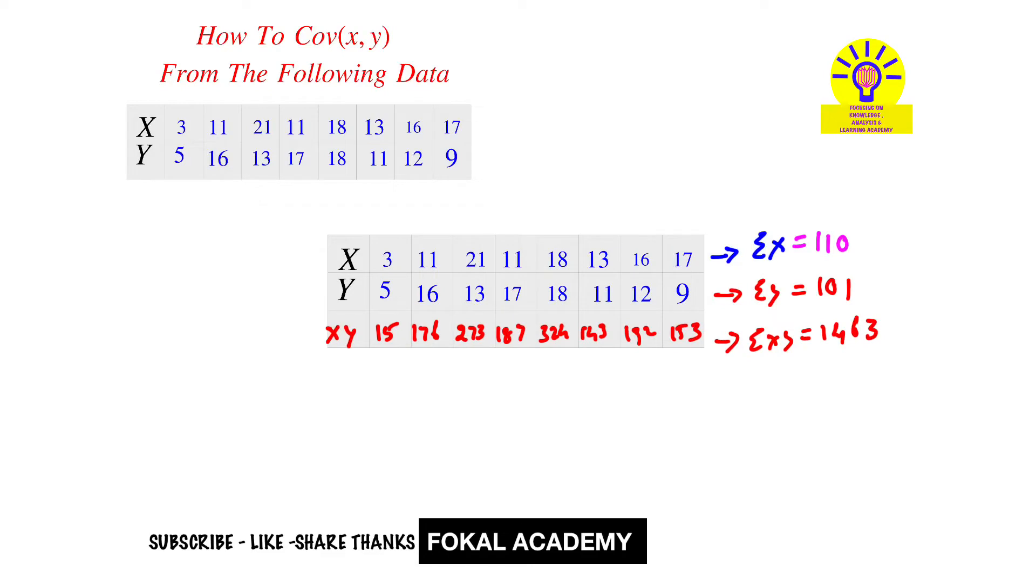In the given table we have eight observations, so totally eight observations are there, so n equal to 8. Now this data is useful for finding the covariance between x and y.